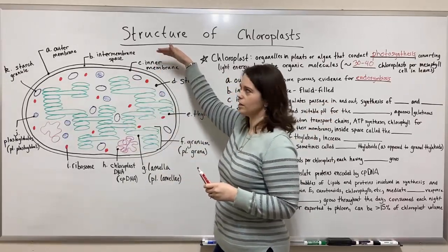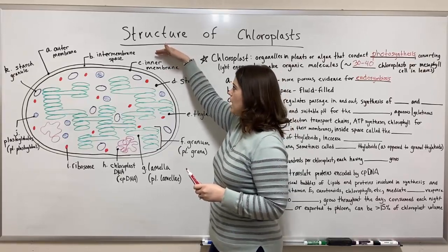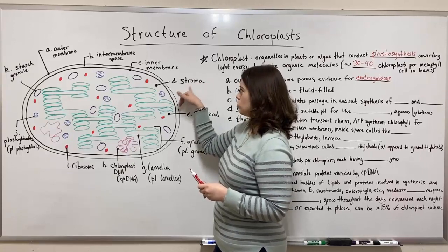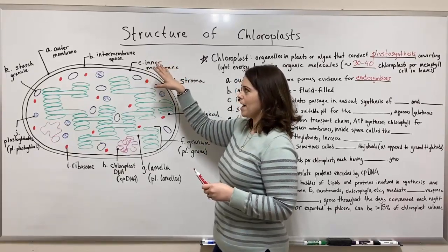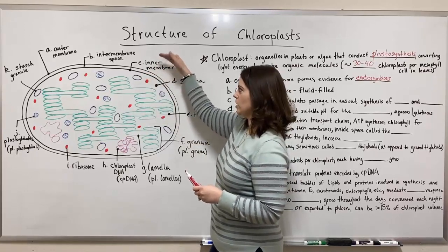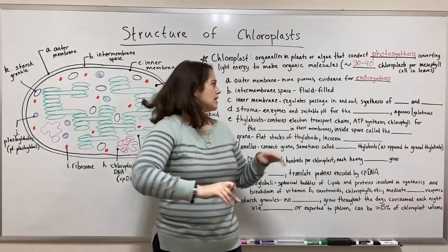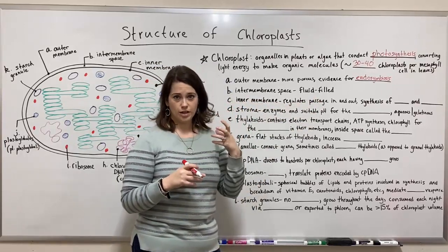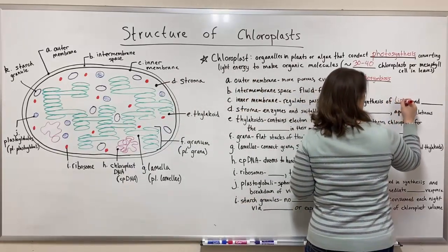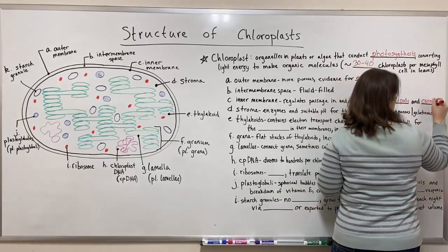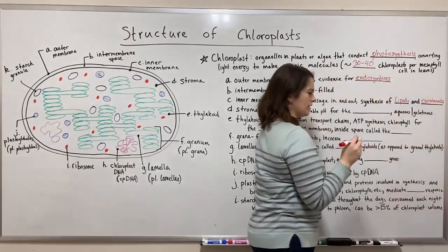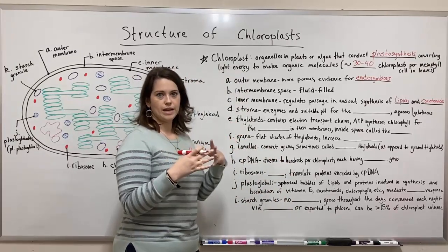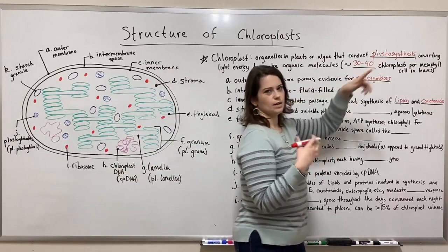Movement of things from outside the chloroplast — remember, outside the chloroplast is going to be the cytoplasm of the cell — into the inside compartment, which is a fluid-filled area known as the stroma. The inner membrane does a much better job at regulating passage in and out than the outer membrane does. In addition to regulating that passage, the inner membrane is also a location for synthesis of important things, particularly certain lipids and carotenoids. Carotenoids are basically accessory pigments that absorb excess wavelengths of light during photosynthesis to protect the leaf tissue.